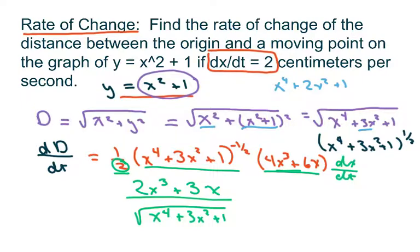Derivative of x with respect to t is 2. So I'm going to multiply this by 2, so that's what we have here. And when you do that, you're going to get 4x cubed plus 6x over square root of x to the fourth plus 3x squared plus 1.